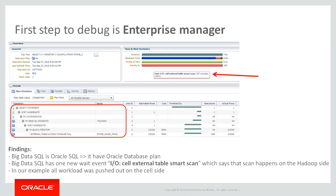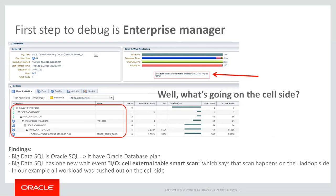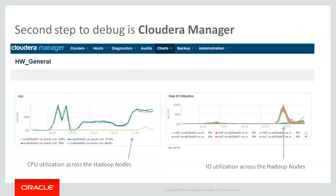In our concrete example, all workload was pushed out toward the cell side — toward the Hadoop side — so the database was not utilized there. Now I know that I pushed work down to the cell side, but what's going on on the cell side? It's interesting to know whether I'm CPU-bound or disk-bound. To answer that question, it's great to jump into Cloudera Manager, or Ambari in the case of Hortonworks.